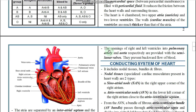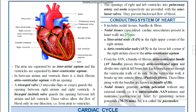The openings of the right and left ventricles into the pulmonary artery and aorta respectively are provided with semilunar valves. Both the ventricles directly open into the pulmonary artery and aorta respectively, and two semilunar valves are present. The function of the semilunar valves is to prevent backward flow of blood from the aorta to the ventricles.